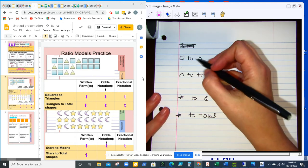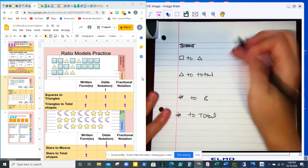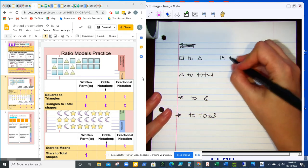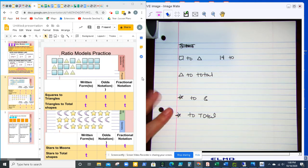So the first one, the first ratio that we're going to write is squares to triangles. So that would be 14 squares to six triangles.